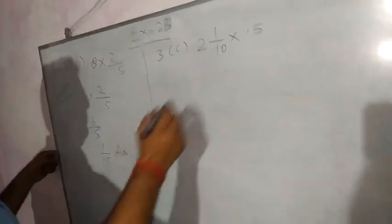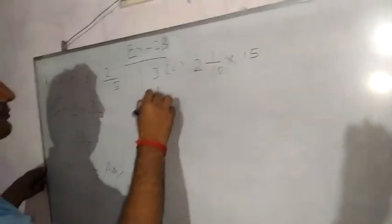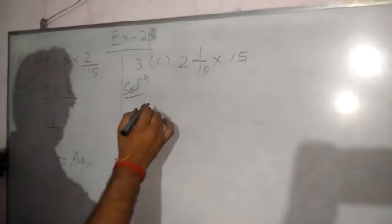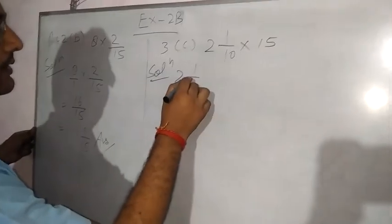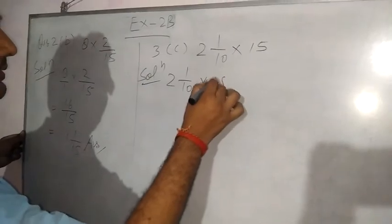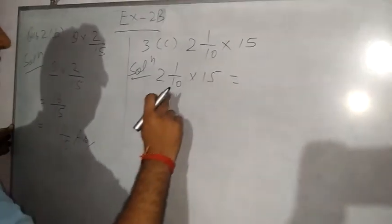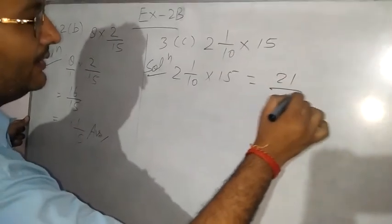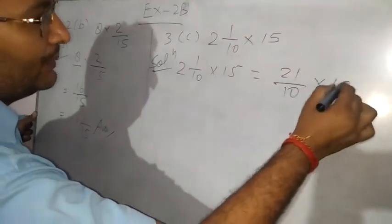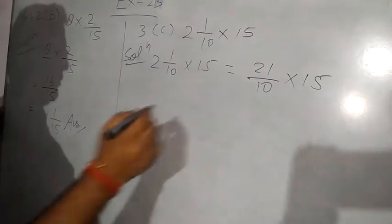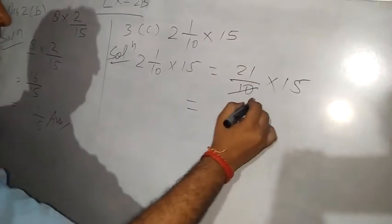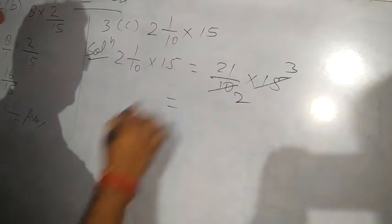Now this solution: First you change this mixed into improper fraction. So what we can write 2 whole 1/10 × 15, that means 10 × 2 = 20, 20 plus 1 = 21, so 21/10 × 15.